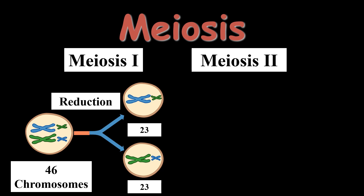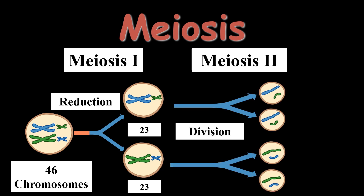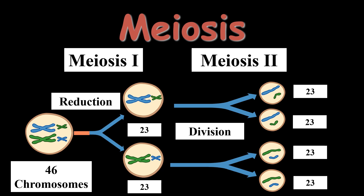Meiosis 1 is followed by Meiosis 2, which is also known as the division phase. In Meiosis 1, the number of chromosomes are already halved, so in Meiosis 2, only division of cells takes place. Each daughter cell will give rise to two daughter cells, so at the end of Meiosis 2 there will be four daughter cells, each containing 23 chromosomes — half of that of the parent cell.